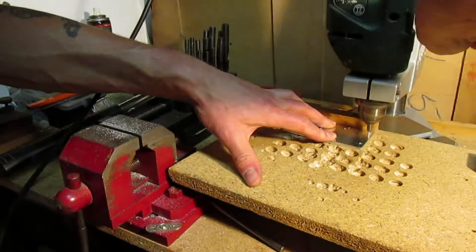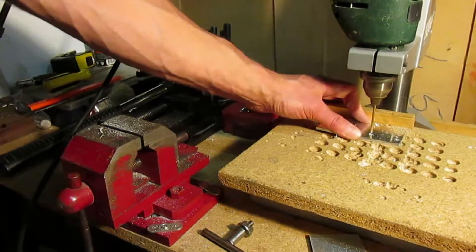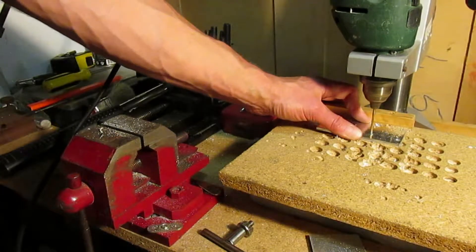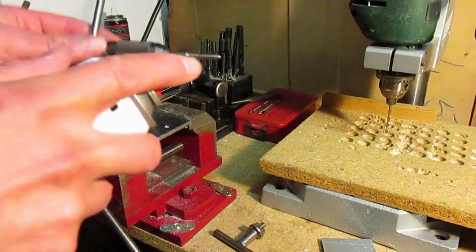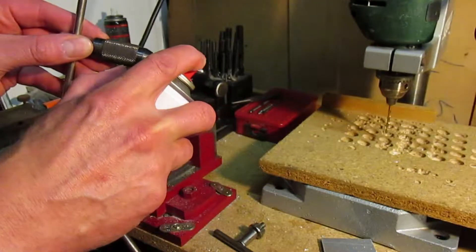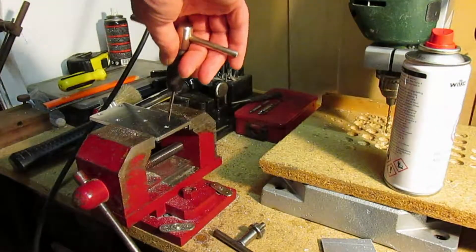Then cutting out all the holes, drill through all holes 3.2 millimeters. Lubricate an M4 tap and tap the required holes.